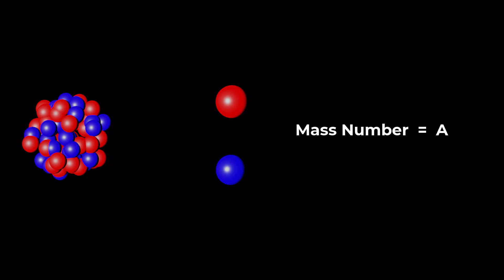The mass number, on the other hand, is the total number of protons and neutrons, or nucleons, in the nucleus, represented by A.